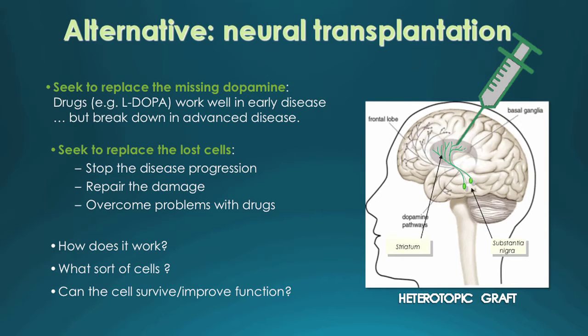One alternative is neurotransplantation — cell replacement therapies. The idea behind these is similar to pharmaceuticals in the sense that we ultimately seek to replace the missing dopamine in the brain. But what we also aim to do is actually replace the lost cells — to transplant the cells that have degenerated back into the brain. By doing this, we hope to slow or stop disease progression and repair the overt damage that's already occurred. If these cells can survive and release dopamine in a natural physiological way, we hope to overcome the problems we see with pharmaceuticals, both acute and long-term side effects.